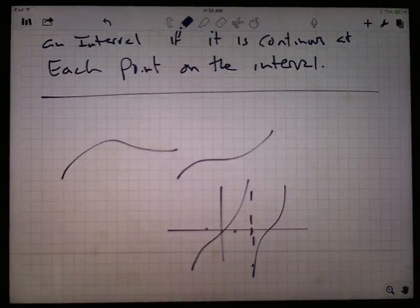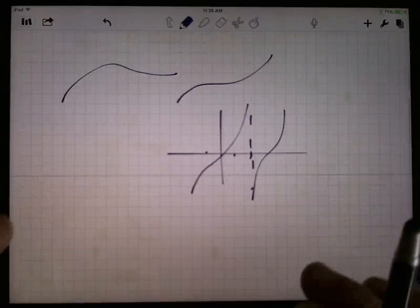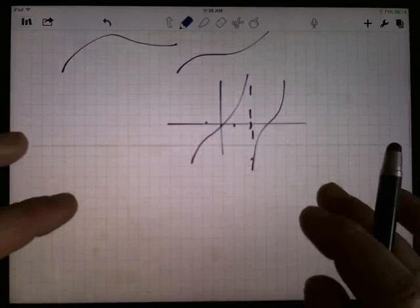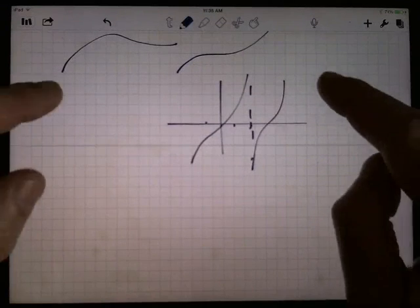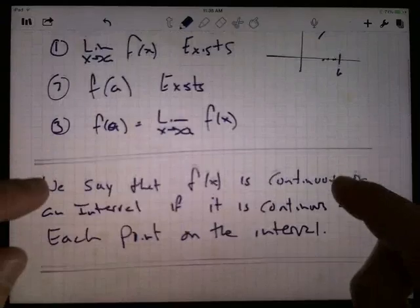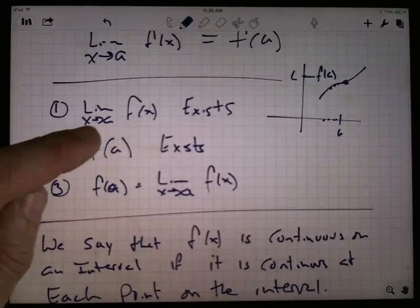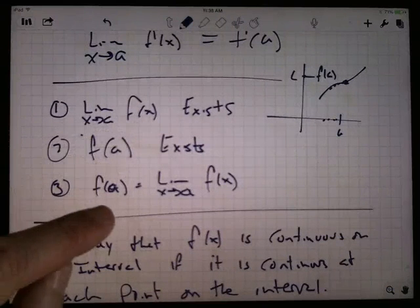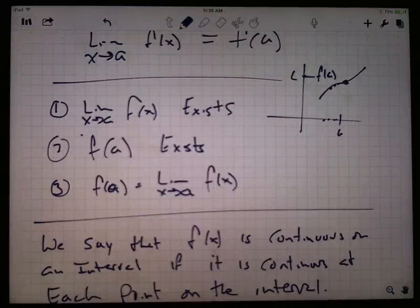Continuous functions are nice functions. They're the ones that are easy to take the limit of, because you can just plug the value in. How do you take the limit as x goes to a? You just plug in a and calculate the function value f(a). That's the limit.